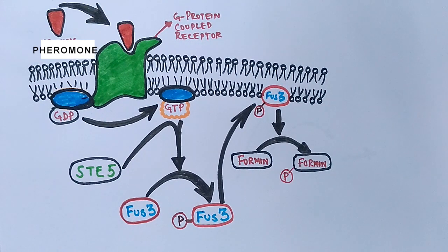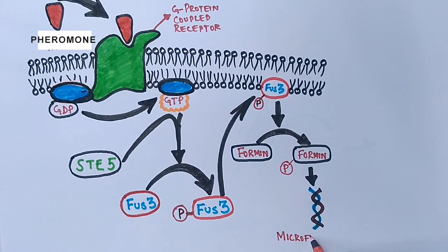As we know, formin proteins are involved in the polymerization of microfilaments and associate with the fast-growing end of microfilaments.